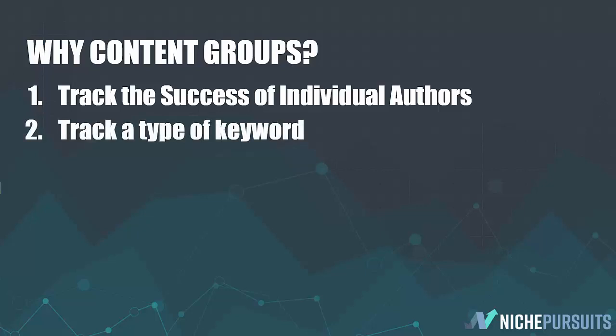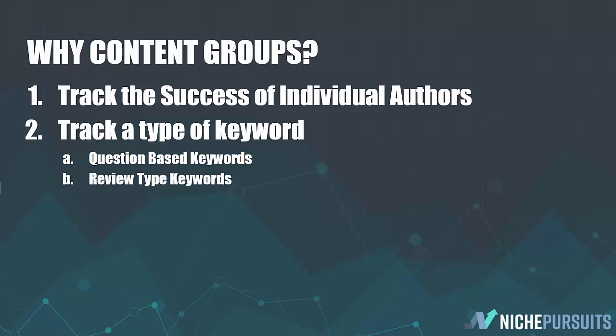Another reason you might want to create a content group is to track a type of keyword. There are lots of different strategies you might go after. If you watched my recent video, I did question-based keywords and showed how to do question-based keyword research. So let's say you wanted to create 10 or 15 articles that all used question-based keywords. You could quickly track and see — without looking at those articles individually, which can be very time-consuming — are these question-based keywords working well?